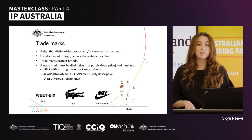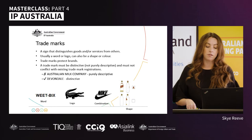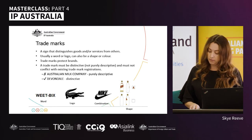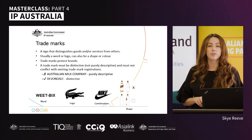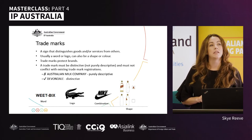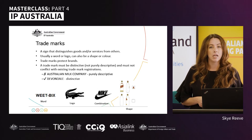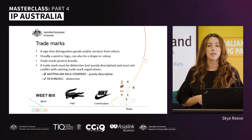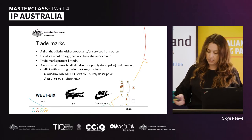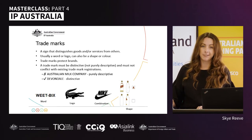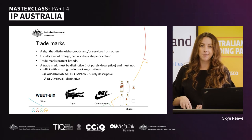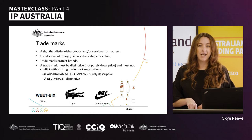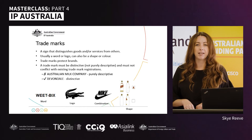Different countries have different systems to protect trademarks — either first-to-file or first-to-use. Australia has a first-to-use system, meaning whoever is first to use a trademark will usually have the first right to use it. In first-to-file countries, it's the first entity that actually files the trademark. This differs across ASEAN nations, so it's important to understand the jurisdiction in which you're planning to trade.